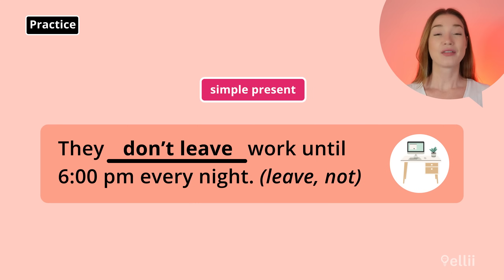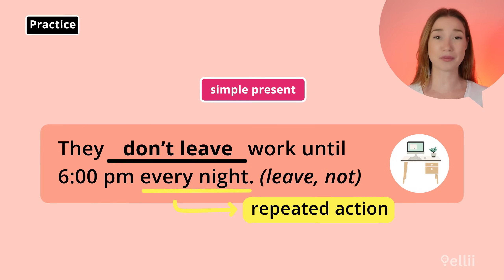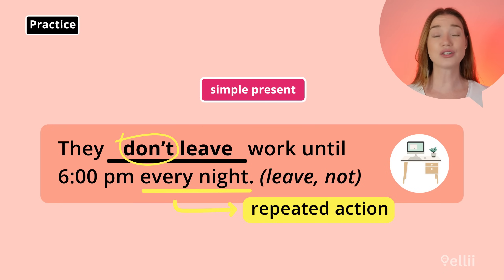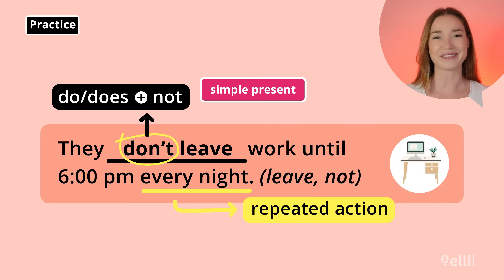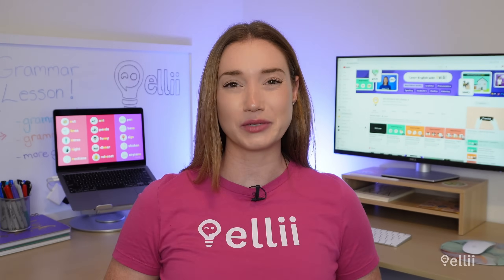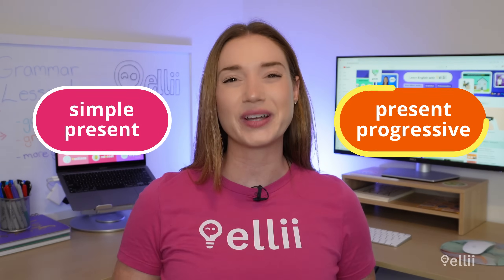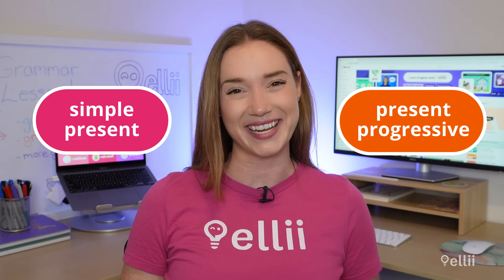Here's the last answer: they don't leave work until 6 pm every night. The time marker every indicates a repeated action, so we need to use the simple present tense. For a negative sentence, we need to use the auxiliary verb do and the adverb not to form don't or do not. Great work! Now you know the difference between the simple present and present progressive tenses. See you next time, and happy studying!